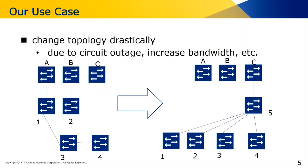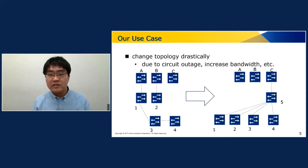Here is a use case example of changing topology drastically — something they actually did. They often change their network topology because of circuit outage, integrating new equipment, or other reasons. In this case, they aimed to resolve cascade connections causing narrowband issues and change a circuit, changing topology from left side to right side. Before the operation, switches A, B, and 1 to 4 were operated by NSO, and they were going to insert switch C and switch 5.